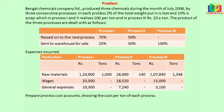Bengal Chemicals Company Limited produced 3 chemicals during the month of July 2006 by 3 consecutive processes. In each process, 2% of the total weight put in is lost and 10% is scrap, which in process 1 and 2 realizes 100 rupees per ton, and in process 3, 20 rupees per ton.